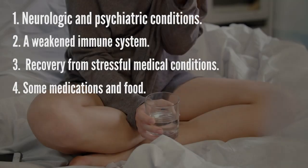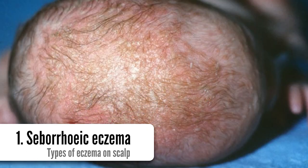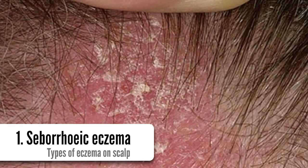Seborrheic eczema is one of the most common types of eczema seen on the scalp and hairline. It can affect babies with cradle cap, children, and adults. The skin appears red and scaly, and there is often dandruff as well, which can vary in severity.